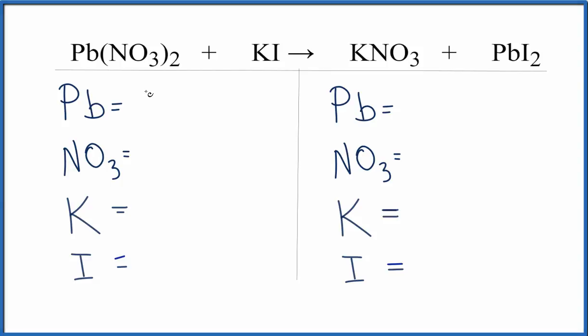So we have lead, one of those, and you'll notice this NO3. I just wrote the whole thing right here because I have an NO3 here and on the product side. So I have one NO3 here and this 2 is multiplied by the whole thing, so I have two of these nitrates, these NO3 ions, potassium 1 and iodine 1.